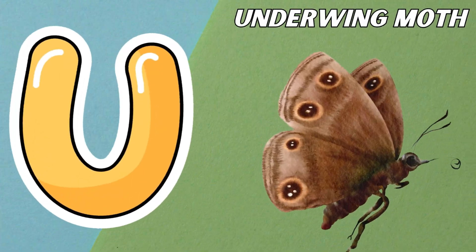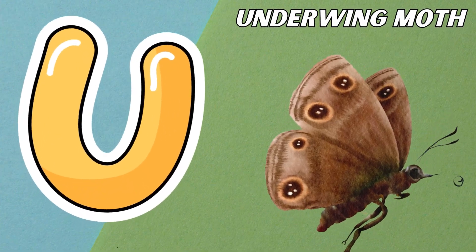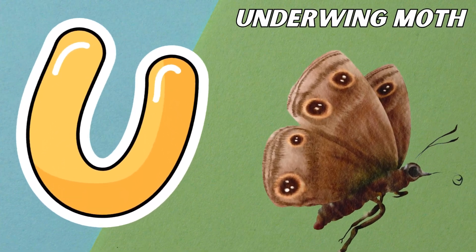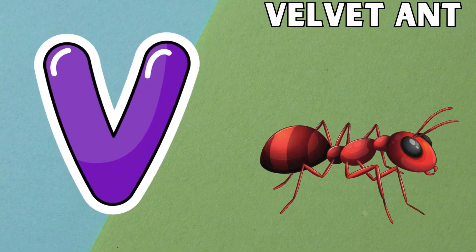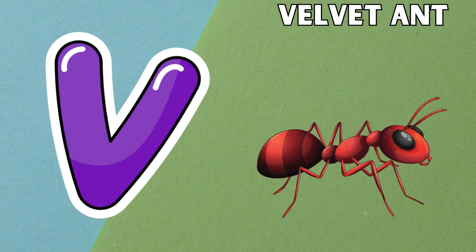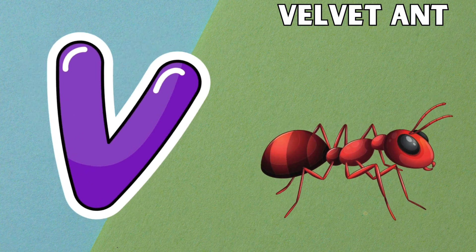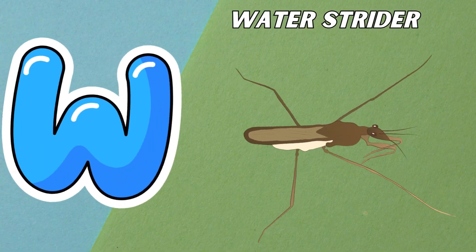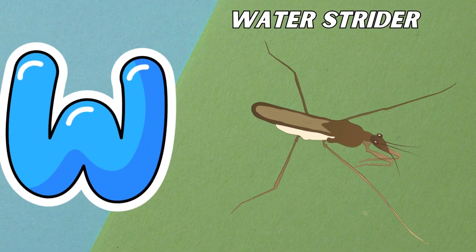U is for Underwing Moth. Underwing Moth. V is for Velvet Ant. V, V.